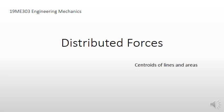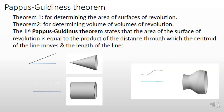In this video, I will be explaining one application of determining centroids of lines and areas. There are two powerful theorems for determining the area of surfaces of revolution and for determining volume of volumes of revolution, given by Pappus and Guldinus.